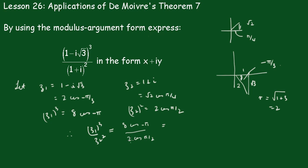Dividing these we get 4. And subtracting the arguments we're going to get that equal to minus 3 pi upon 2.